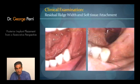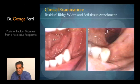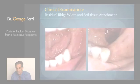When we're looking at a posterior segment, the number one thing to evaluate is the diameter or the width of the ridge.